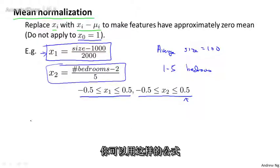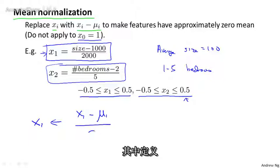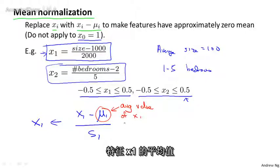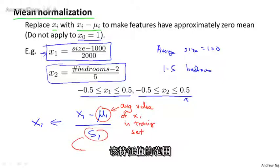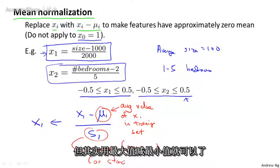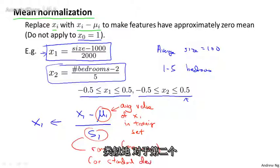And the more general rule is that you might take a feature x1 and replace it with (x1 - μ1) / s1, where μ1 is the average value of x1 in the training set, and s1 is the range of values of that feature. And by range, I mean the maximum value minus the minimum value. Or for those of you that know what the standard deviation of a variable is, setting s1 to be the standard deviation would be fine too. But taking this max minus min would be fine.